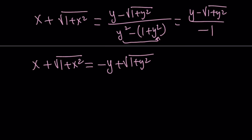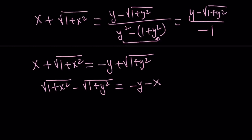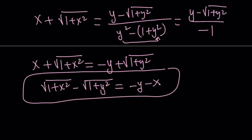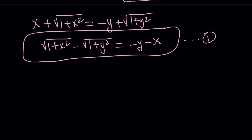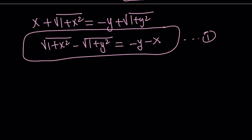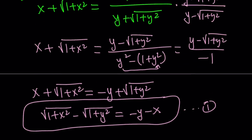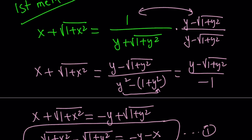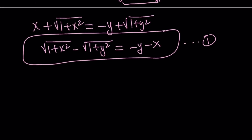Let's put it in a different form — bring the square root of 1 plus y squared to the left-hand side by subtracting it, bringing the two radicals together. Everything else goes to the right-hand side, which we can write as negative y minus x. That's going to be our Equation 1. Now, I'm going to get another equation — Equation 2 — by doing the same thing the other way around, isolating y.